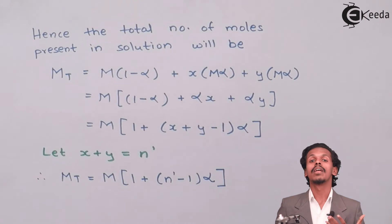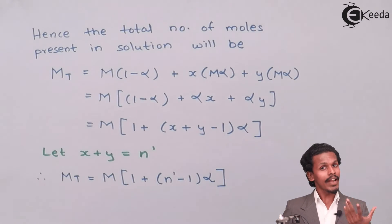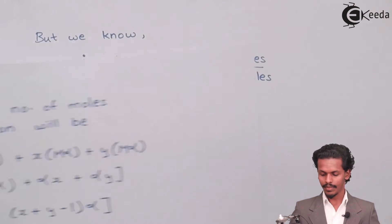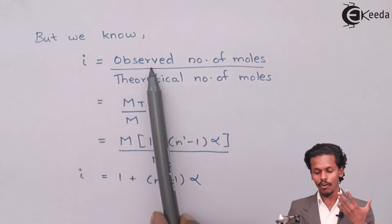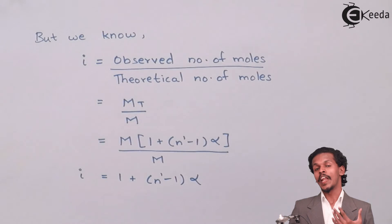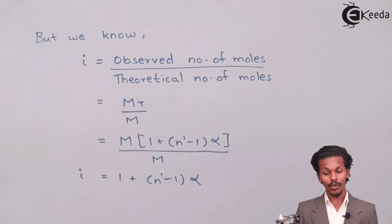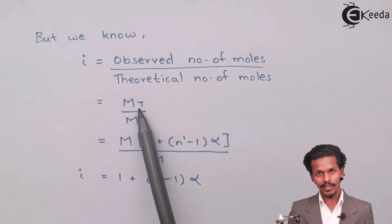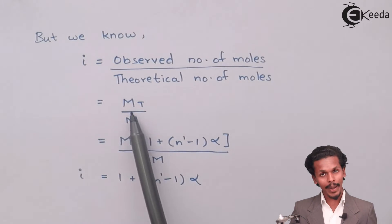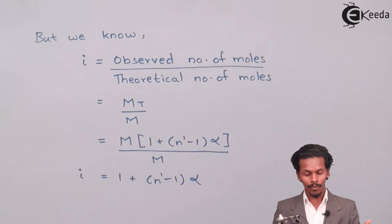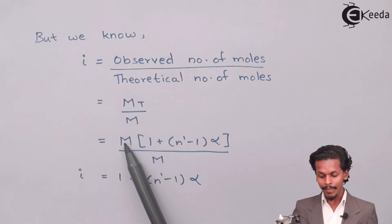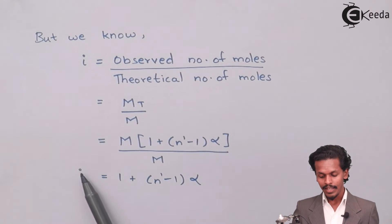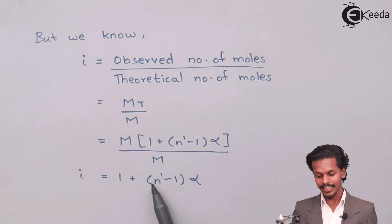We have also studied the Van't Hoff factor. The Van't Hoff factor i is defined as the observed number of moles of solute divided by the theoretical number of moles of solute. The observed moles is M_T and the theoretical is M, so i = M_T / M = M[1 + (n̄ − 1)·α] / M. The M cancels, giving i = 1 + (n̄ − 1)·α.